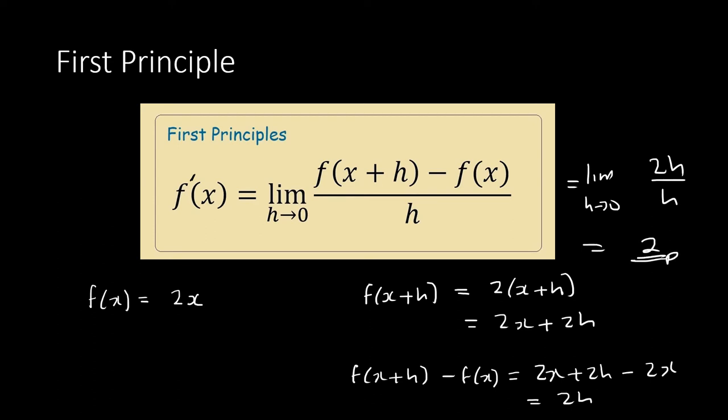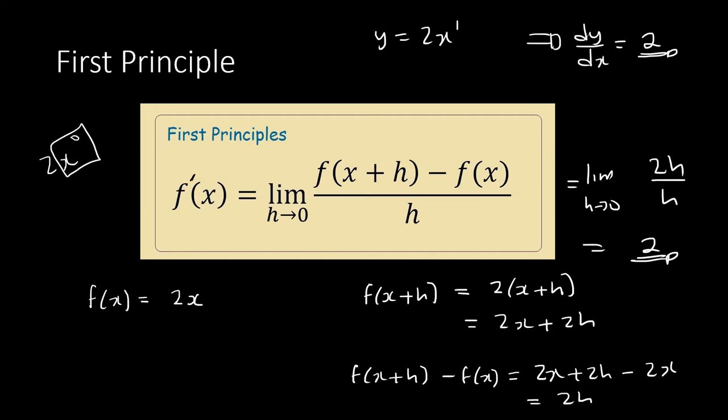Substituting into the formula: limit h→0 of 2h over h leaves us with 2. We already know from normal differentiation that the derivative of 2x is 2. So make sure you don't get this wrong — you are working towards an answer you already know, so you should always get it correct.